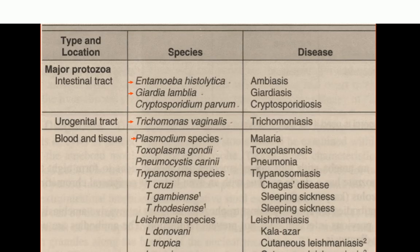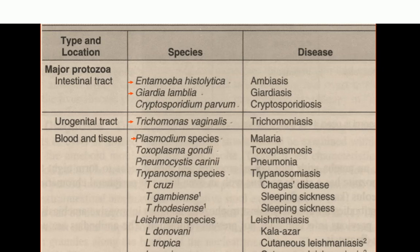This slide shows some important parasites and their locations. Location is very important. The major protozoa have been classified as intestinal protozoa (present in the intestinal tract), urogenital protozoa (responsible for sexually transmitted infections), and blood or tissue protozoa. Intestinal examples include Entamoeba histolytica (amoebiasis) and Giardia (giardiasis). Trichomonas vaginalis is a sexually transmitted parasite in the urogenital tract. Among blood and tissue parasites, the most important is Plasmodium species, responsible for malaria.